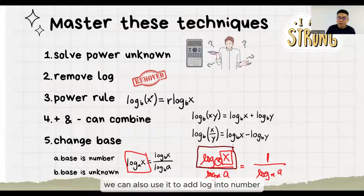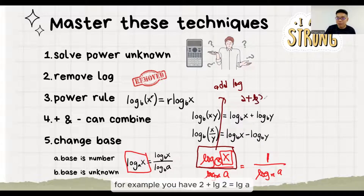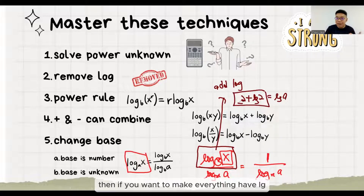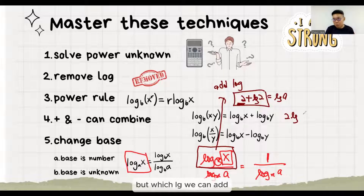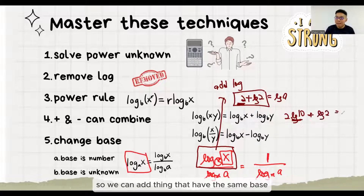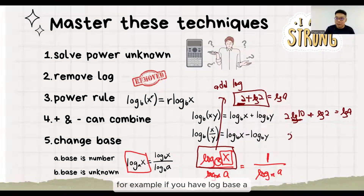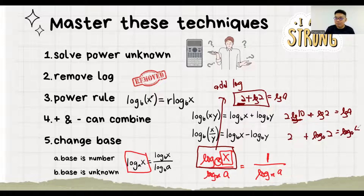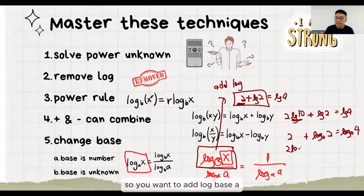By knowing this logic, we can also use it to add log to a number. For example, you have 2 plus LG 2 equals LG A. If you want to make everything have LG, this 2 needs to have LG also. Which LG can we add so it won't affect the value? LG 10, because LG is log base 10. Log base 10 of 10 is actually 1. So we can add things that have the same base. For example, if you have log base A, you add log base A of A, which equals 1. You can also do this.